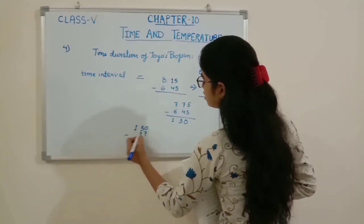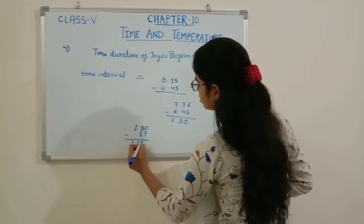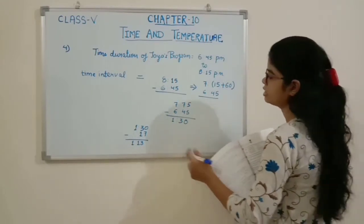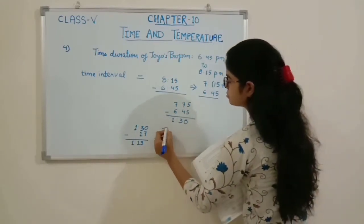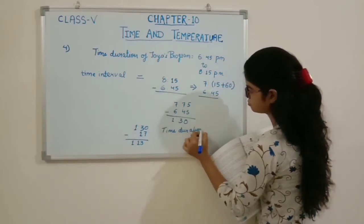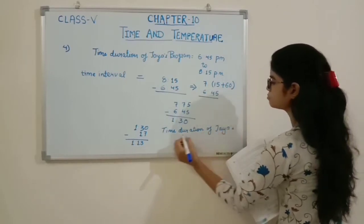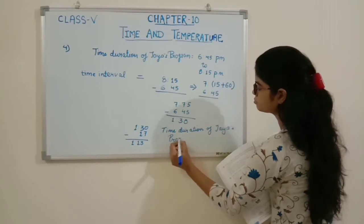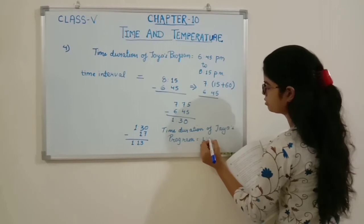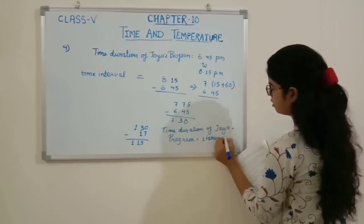1 hour 30 minutes minus 17 minutes gives us 1 hour and 13 minutes. So the duration of Jaya's TV program is 1 hour and 13 minutes.